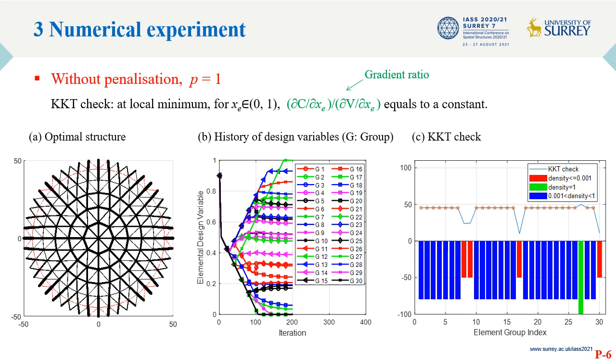Here comes the results of the first example, where the penalization factor equals to 1. The optimal structure is shown in A, where the line width represents the value of the design variable. The thin red lines represent the elements that have design variables close to 0.